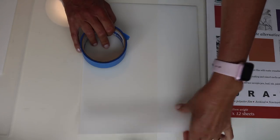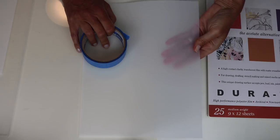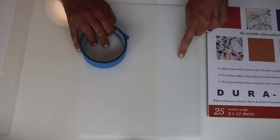Tape a single sheet of duralar down on a flat surface like a table. Only the top and the bottom get taped. You want to leave the sides open.